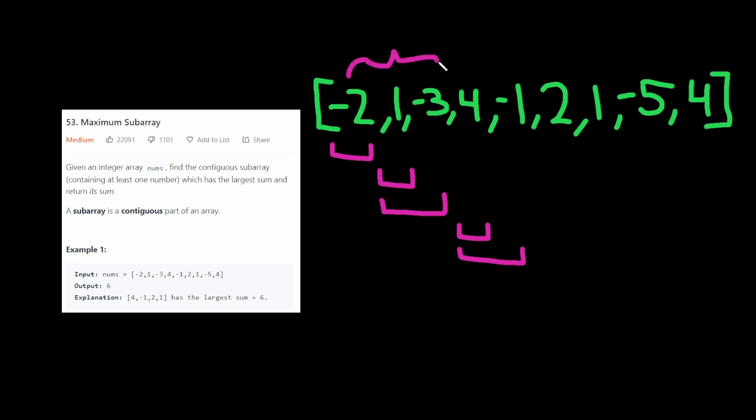For example, this here is going to be negative 4, right? And this here is going to be negative 1. So we don't want these parts of the array included in our output. The maximum is here.